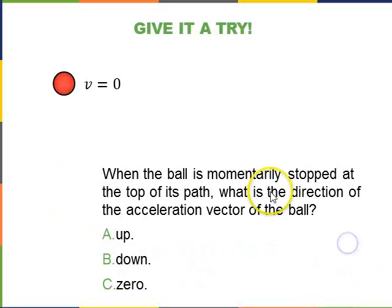Second question is, when the ball is momentarily stopped at the top of its path, so V equals zero, what is the direction of the acceleration vector of the ball? Pause the video, think about it, and then we'll discuss.